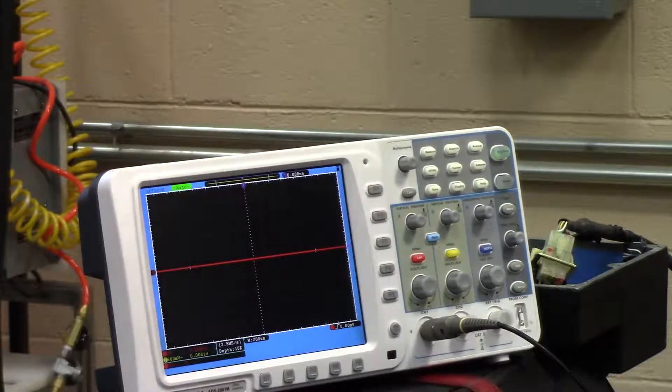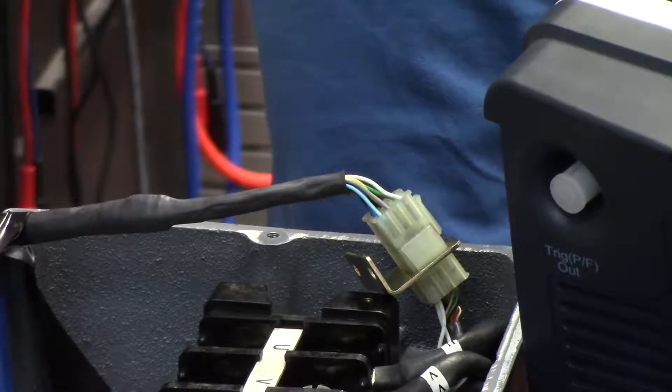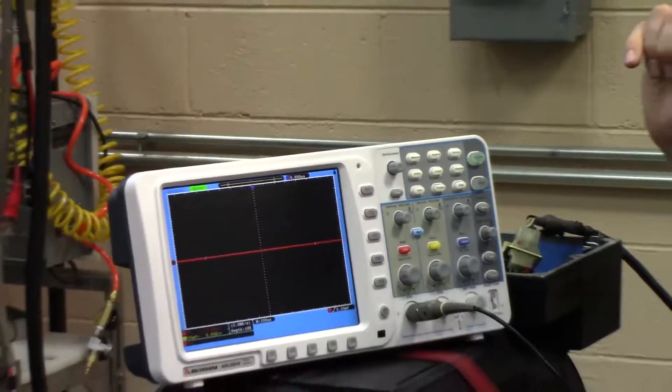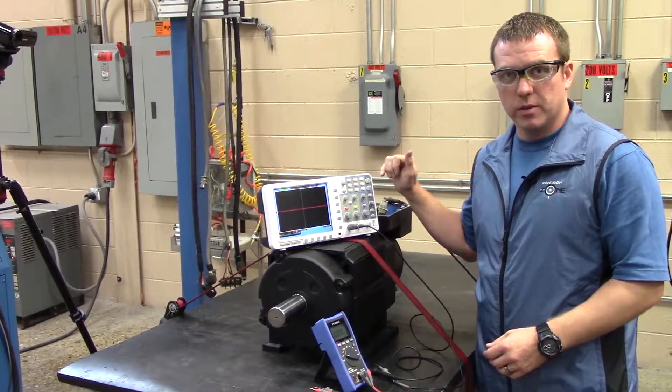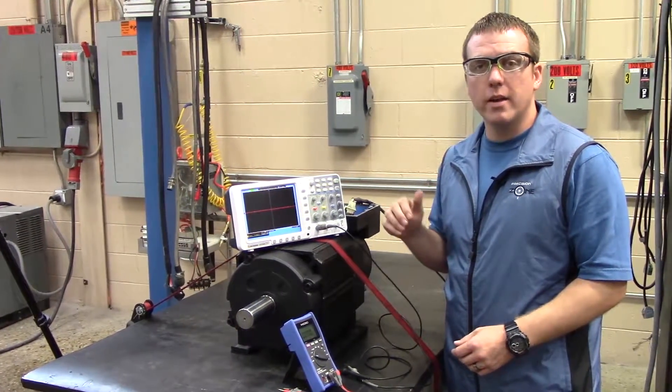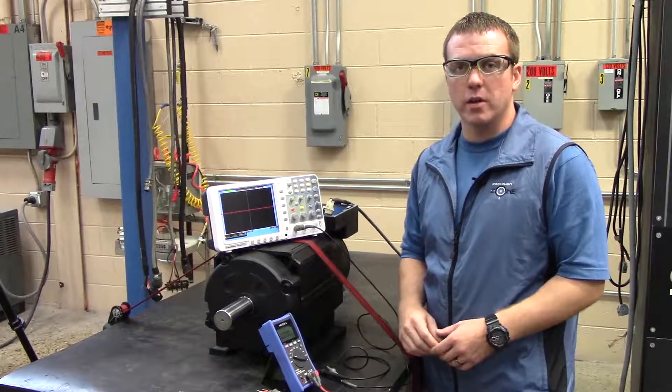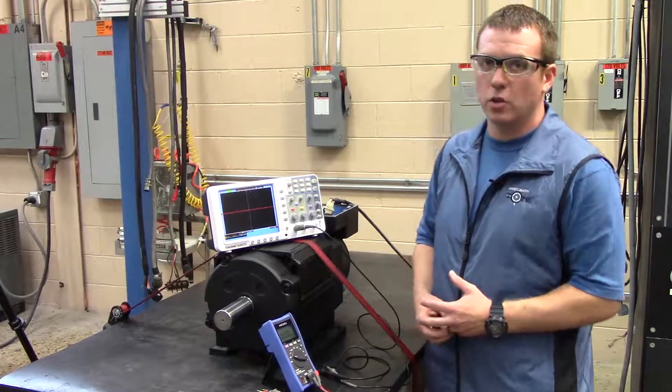So one of the things you definitely don't want to ever do is put the five volt power to any of the signals. If you do that, you will blow up the encoder and then you're going to have to pull it and send it into us for repair.